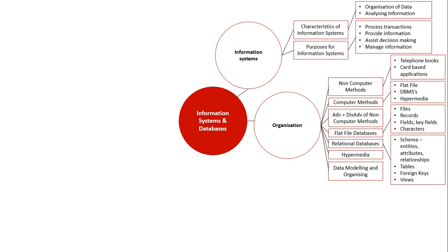Relational models involve linking tables together in order to reduce data redundancy and increase data integrity. They are comprised of entities, attributes, and relationships. The entity is the table, the attributes are the fields, and the relationships are one-to-one, one-to-many, and many-to-many. Linking is achieved through foreign keys — a primary key taken from one database and entered as a foreign key into another, establishing the relationship between two data entities. Different views include forms, table, and report.